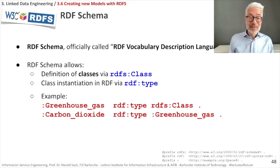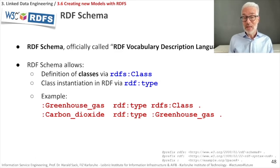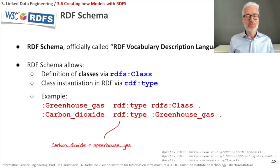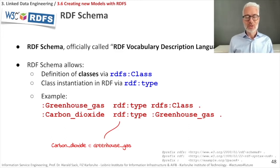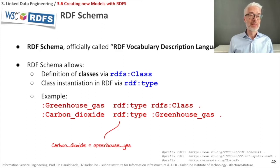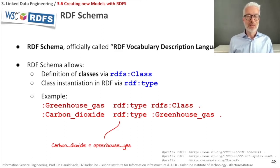So greenhouse gas is a class. And now a specific greenhouse gas, which is an instance of exactly that kind of class, I would denote as: carbon dioxide is of rdf:type greenhouse gas. So then I would know carbon dioxide is an element of exactly that class. You could write it in set notation. Please also note that we have all the necessary prefix definitions to fully understand what we are writing here in RDF Turtle. These are relative URIs, and I use some kind of base URI. I can use RDF and RDFS as abbreviations for the two namespaces.